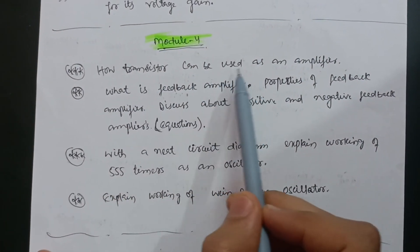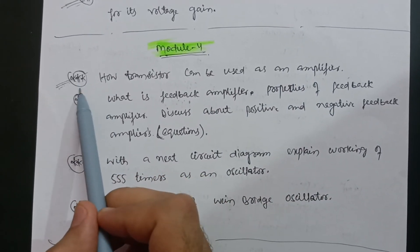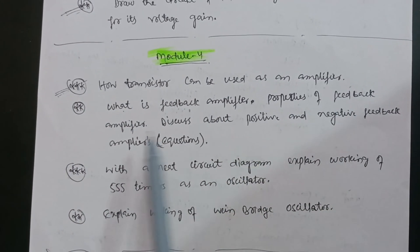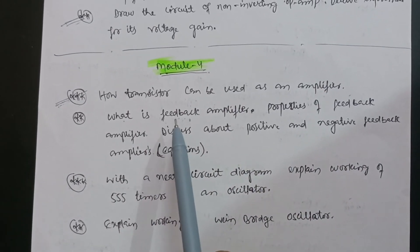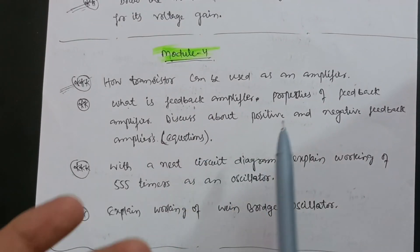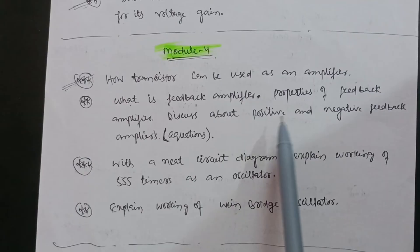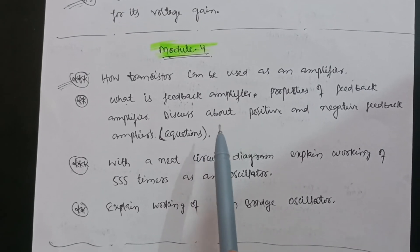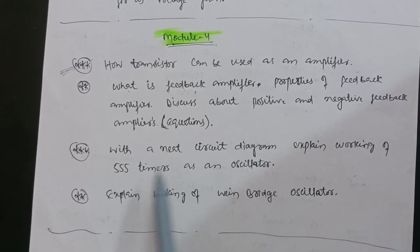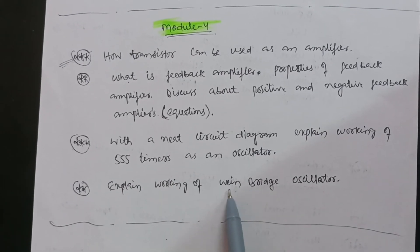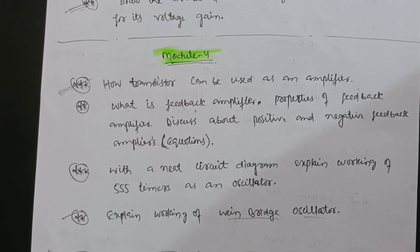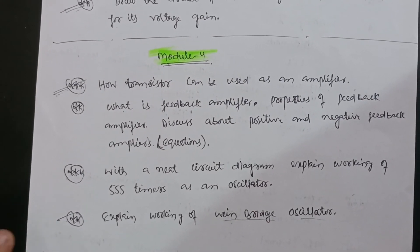Focus on these five questions in Module 3 to easily score 10 to 12 marks. In Module 4, the most important question — marked with triple stars — is how a transistor can be used as an amplifier. Also cover: what is a feedback amplifier, its properties, and positive vs. negative feedback. Draw neat sketches and write corresponding equations for both feedbacks. With a neat circuit diagram, explain the working of a 555 timer as an oscillator, and also explain the working of a Wein bridge oscillator. No need to go through the difficult numericals.